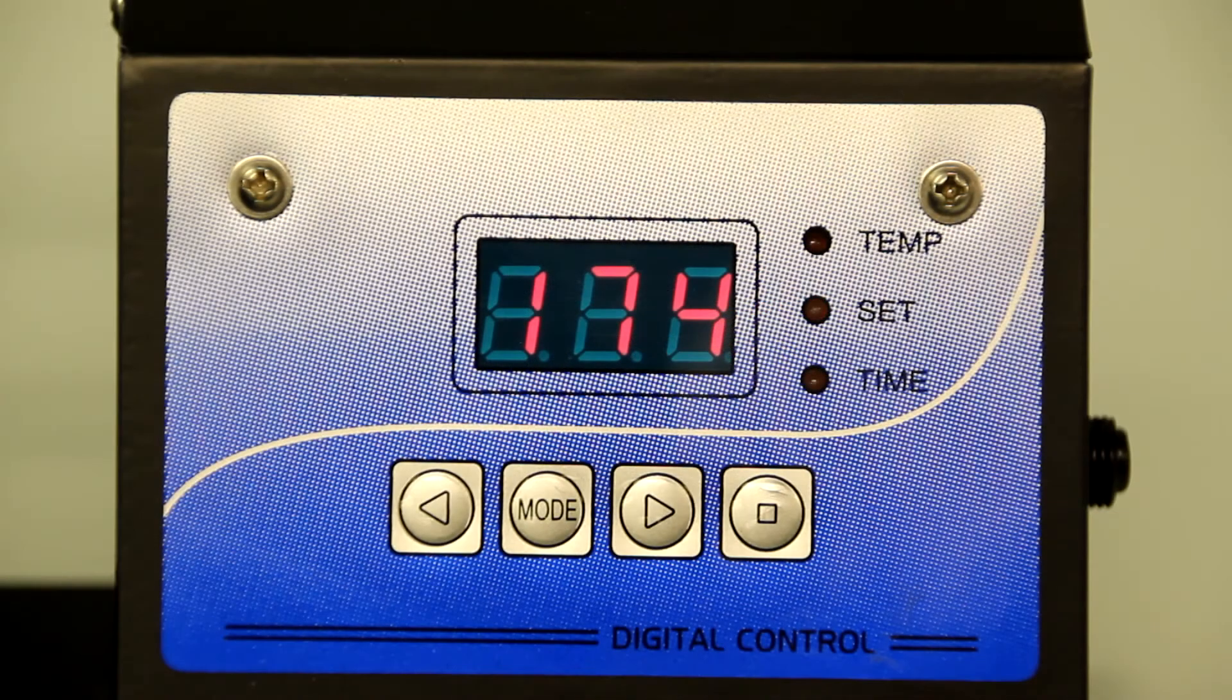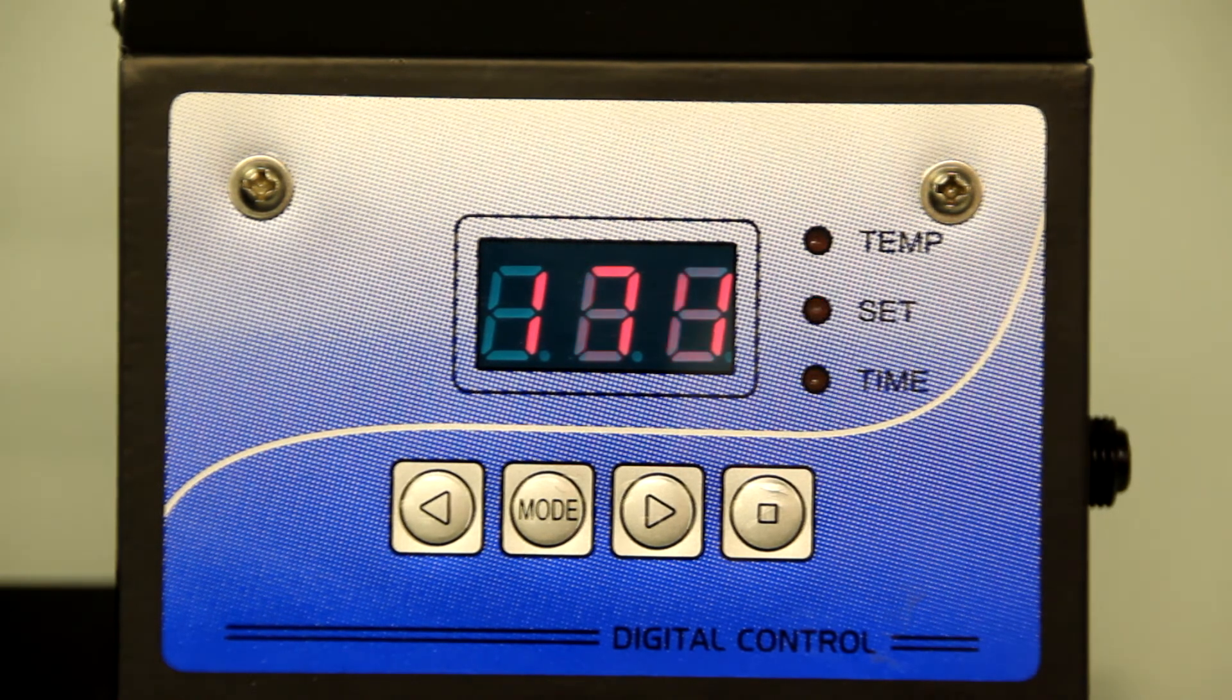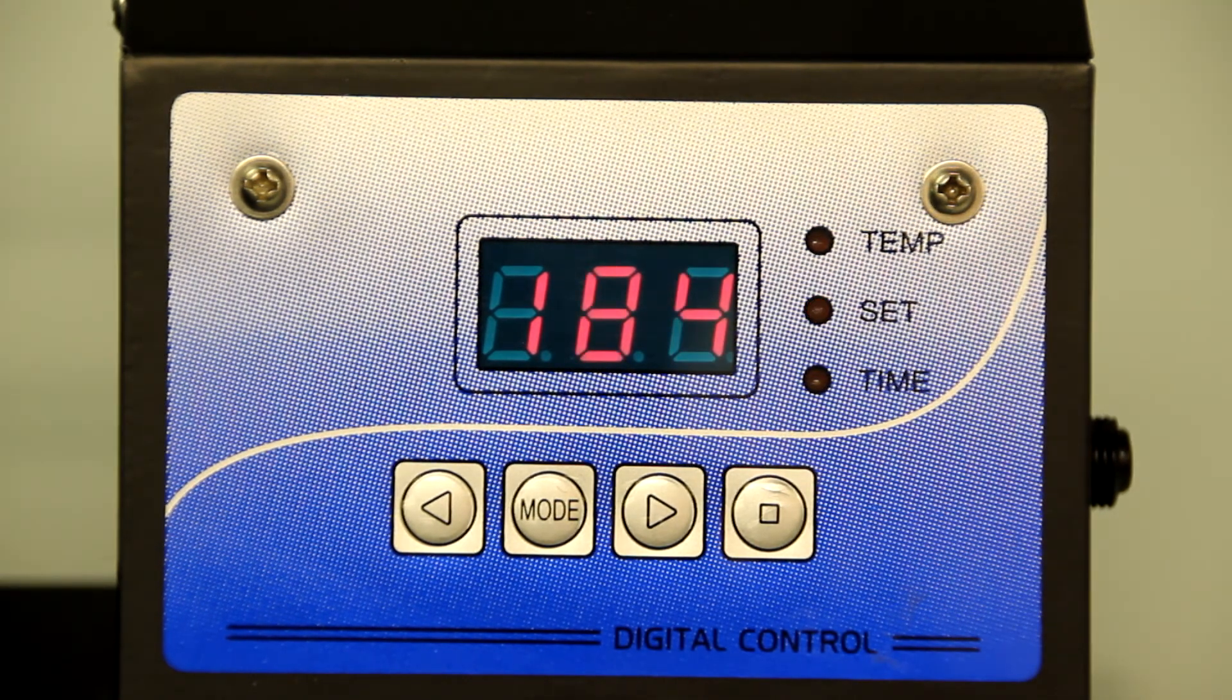The current mug temperature will then be displayed and as the mug was at room temperature it will fall before climbing to 185 degrees C. When at 185 the time will then count down and an alarm will sound when it reaches zero.